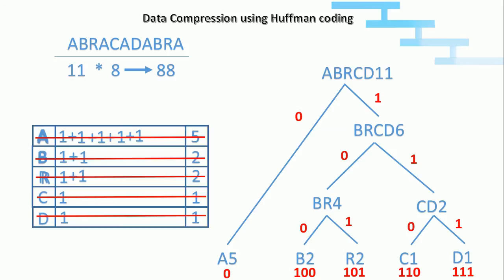Now we will compress the ABRACADABRA with the code which we have found. So we wrote ABRACADABRA. Now replace all the A with 0. Next, we will take B. Now replace all the B with 100. Then replace all the R with 101. Next, replace all the C with 110. Next, replace D with 111.